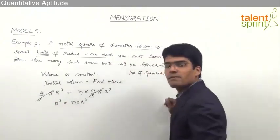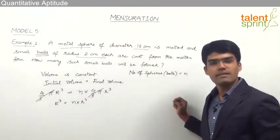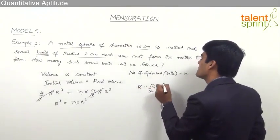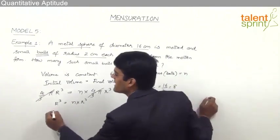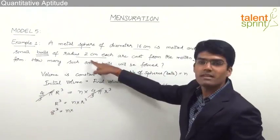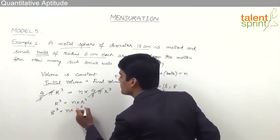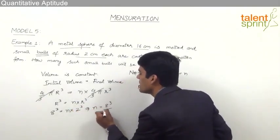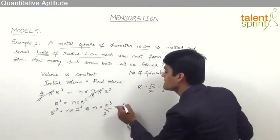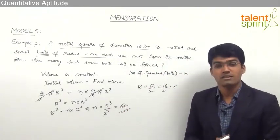Capital R is the radius of the large sphere. As given, the diameter is 16, so the radius R = 16/2 = 8 centimeters. So we have 8³ = n × 2³. Therefore n = 8³ / 2³. Since 2³ = 8, we get 8³/8 = 8² = 64. So the number of small balls formed is equal to 64.